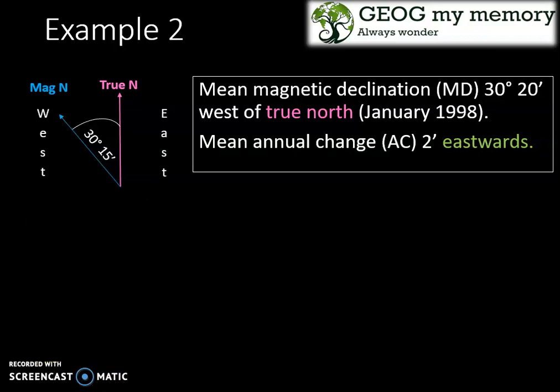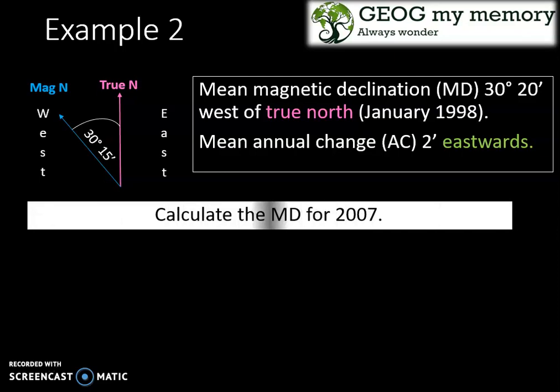Let's consider another example. The mean magnetic declination is 30 degrees 20 minutes west of true north in January 1998, with a mean annual change of 2 minutes eastwards. Calculate the magnetic declination for 2007.